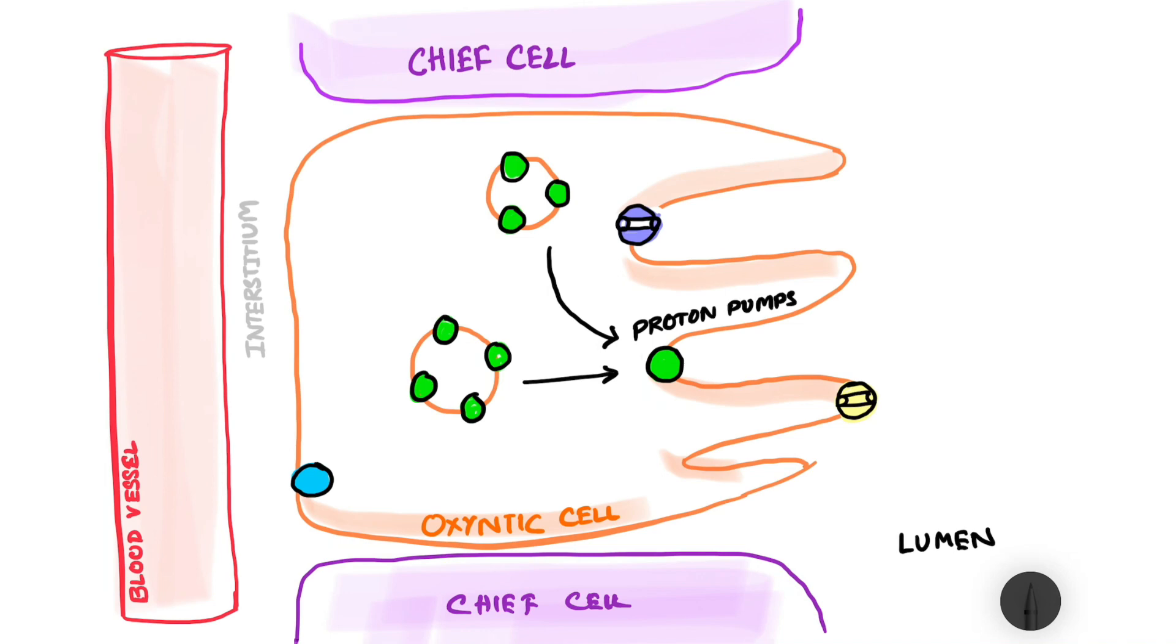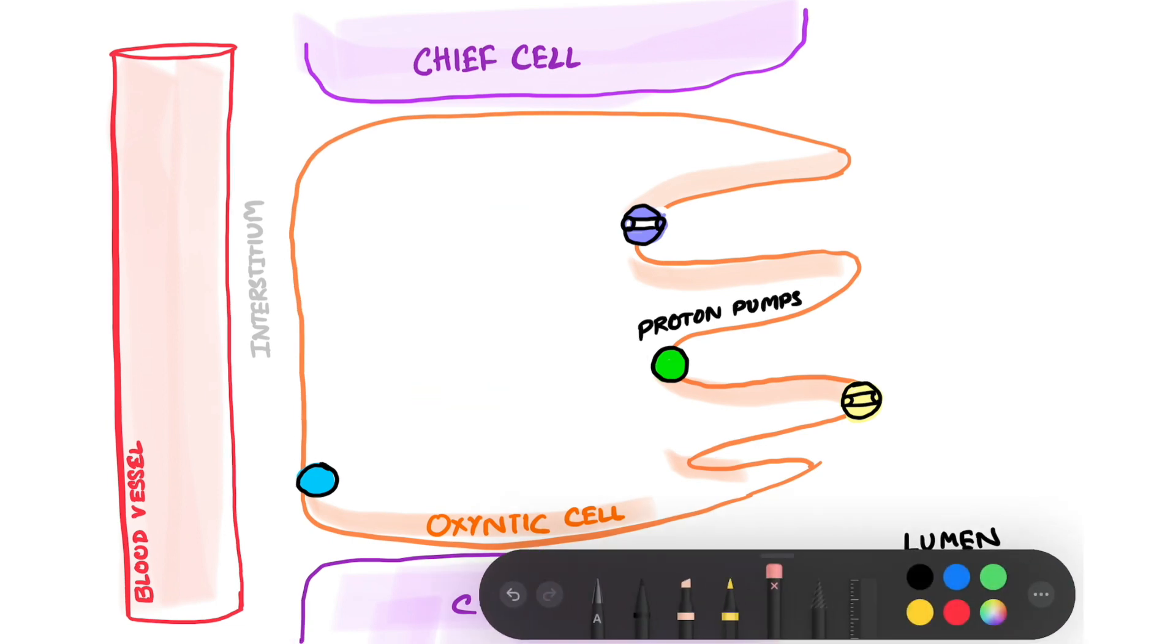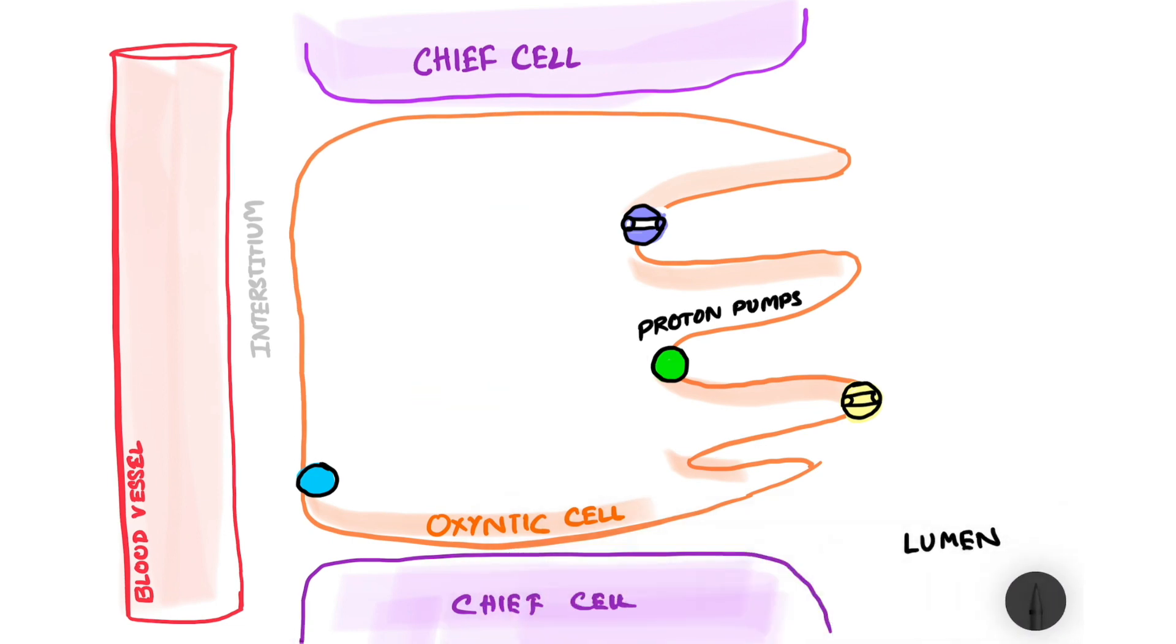Now there are other players in the game as well. So for now let's remove the vesicles from here. Along with the proton pump we have a potassium channel also inserted in the luminal face of the oxentic cell and we also have a chloride channel.